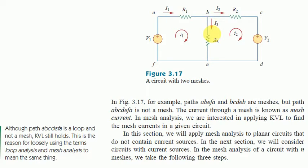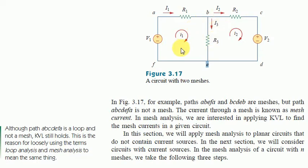Mesh and loop are different. A mesh is a loop, but if you go A, B, C, D, E, F, A — that is a loop, but it is not a mesh. Because the loop is too big; it contains a branch R3 inside it.